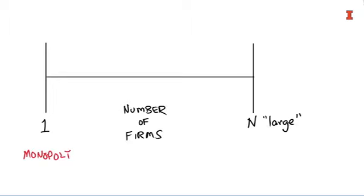At the other polar example, we have N large — that means there's just lots and lots of firms out there. Our polar example for that was something called the perfectly competitive market, or perfect competition. We understand perfect competition and its outcome. We know there were some restrictive assumptions, but we set up this polar example and monopoly as a polar example.